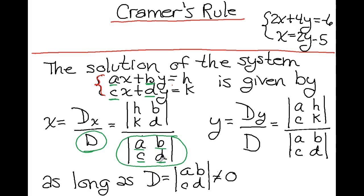We're taking the determinant of the coefficient matrix. How does D sub x differ from D? The second column — the y coefficients — is the same, with b and d. Instead of having a and c as our x coefficients, we replace that column with the numerical values that our equations equal: h and k. So D sub x means you're replacing the x coefficients with the solutions to our equations.